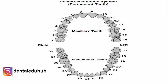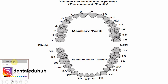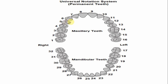Now we will discuss the number of this tooth in various tooth notation systems. In the universal numbering system, the number of the maxillary right first premolar is 5 — numbering begins with the third molar as 1, 2, 3, 4, 5. And for the left maxillary first premolar, the number is 12.